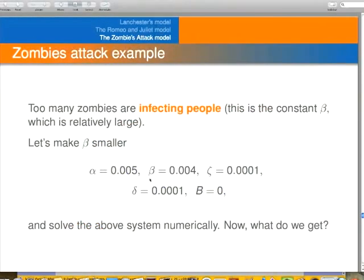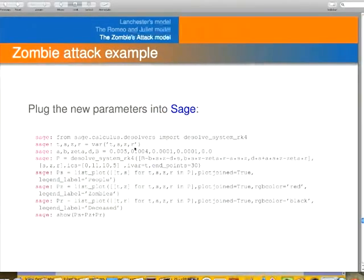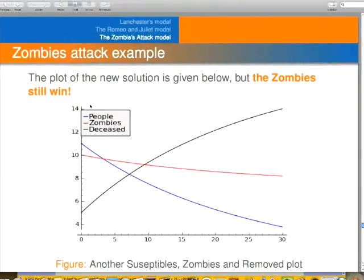So let's try some different numbers. Let's make this constant B a little bit different. The constant B represents how many zombies infect people. So let's make B a little bit smaller, see what happens. And the same system of differential equations, just slightly different setup here. There's the new value of beta.